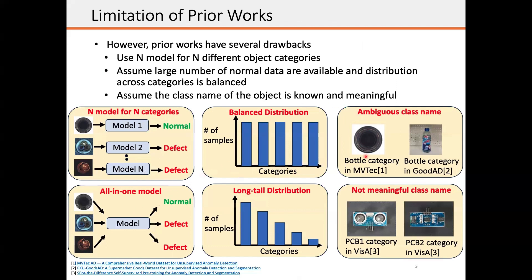Second, they assume that large numbers of normal data are available and the distributions across categories is balanced. However, in the real world, this might not be the case due to, for example, export control, where the training examples of certain classes is less than the others.